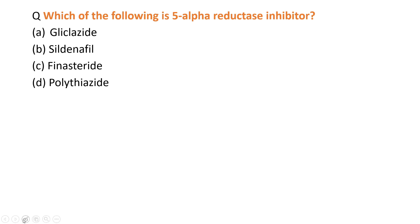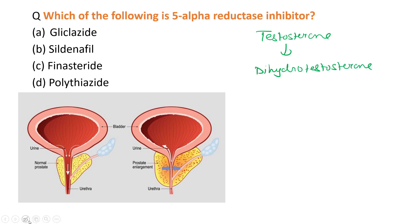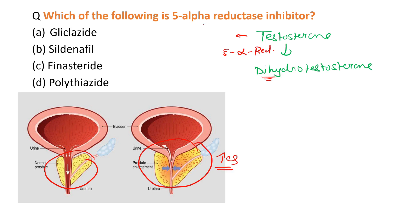The next MCQ: which of the following is a 5-alpha reductase inhibitor? The main function of 5-alpha reductase enzyme is that it converts testosterone to dihydrotestosterone. This enzyme converts testosterone into dihydrotestosterone. Now, testosterone decreases the size of the prostate.